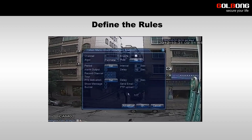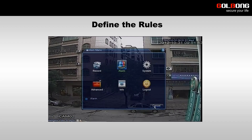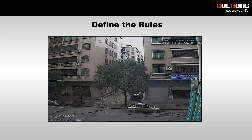Accurate, efficient and convenient, Golbang IVA performs multi-level image analysis of pixel, texture and motion content inside the camera. Intelligent video analysis tracks the trajectory of all objects, and can detect loitering as well as idle or removed objects.